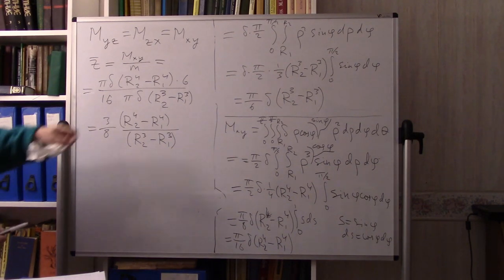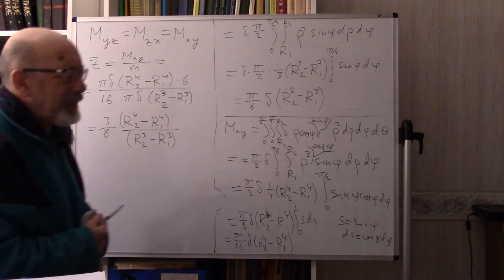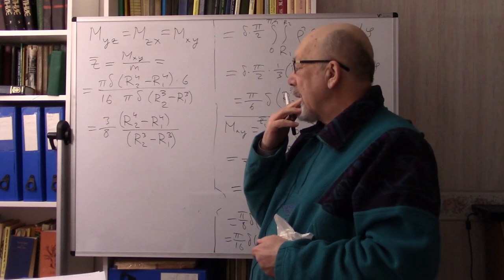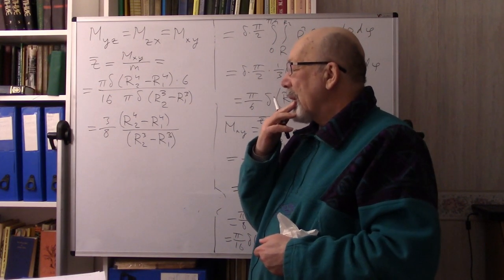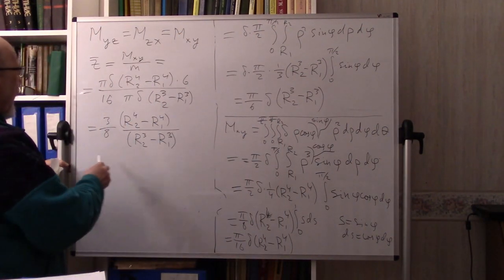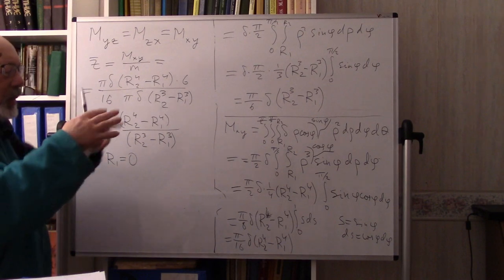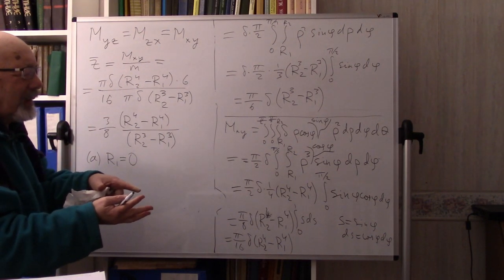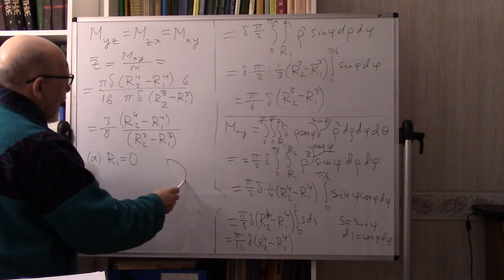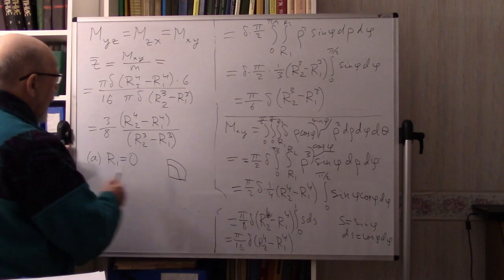The answer doesn't depend on density, and π cancels too — a nice clean answer with two parameters R₁ and R₂. Let's consider two extreme cases. Case A: R₁ = 0, so we have just one-eighth of a ball.